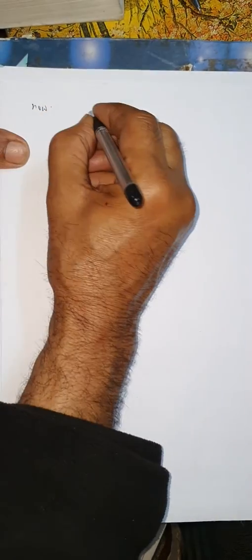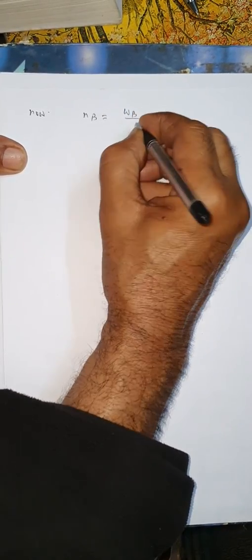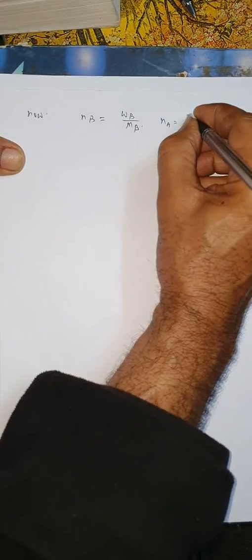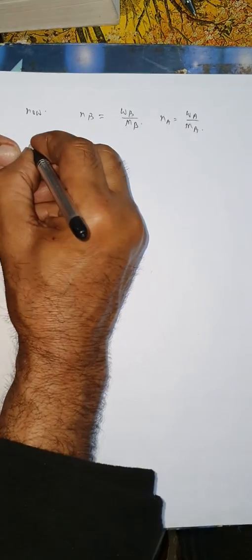Now, NB is equal to WB by MB and NA is equal to WA by MA. Therefore,